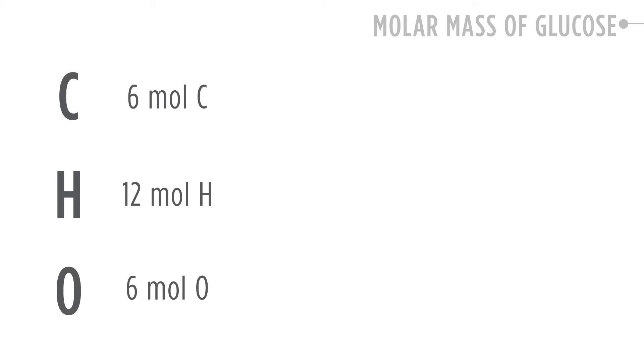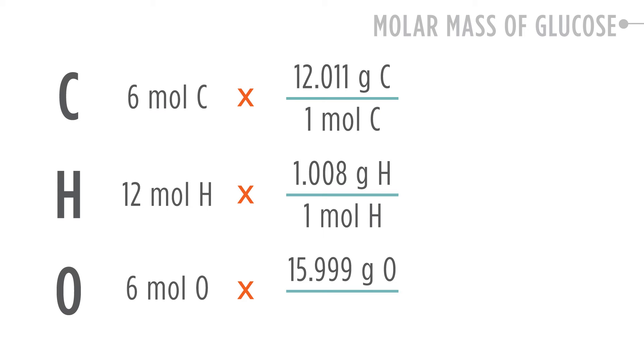To get the amounts for each element, we multiply by their atomic mass in grams per mole: for carbon, 12.011 grams per mole; for hydrogen, 1.008 grams per mole; and for oxygen, 15.999 grams per mole.